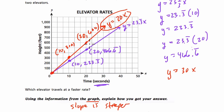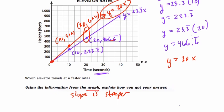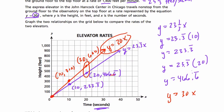You can write about that or you can compare specific points like these two. So this tells me that at 20 seconds, the y equals 30x elevator has gone 600 feet, while the other one's only gone 466 and two-thirds feet. So there's different ways to compare them using the graph. All right, I hope this helps. I'll see you next time.